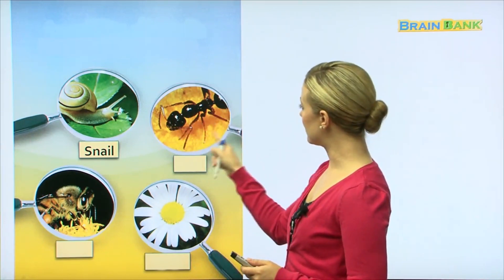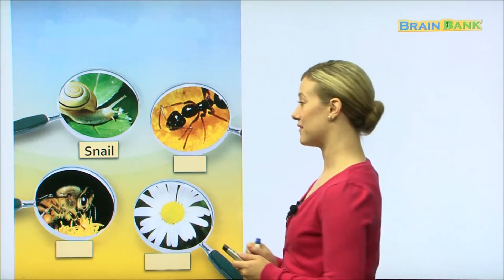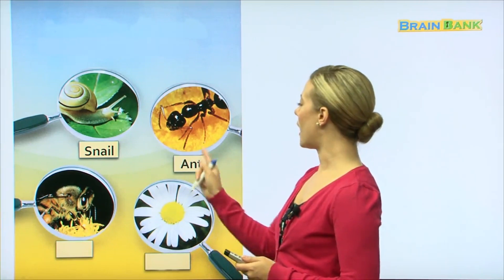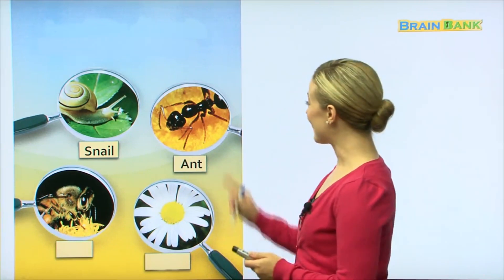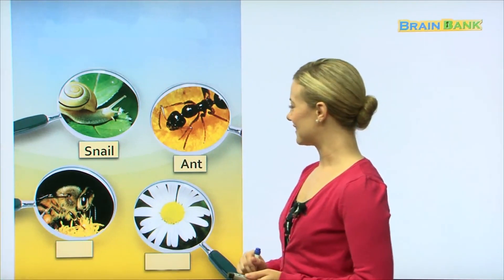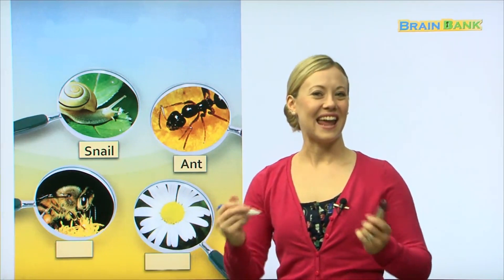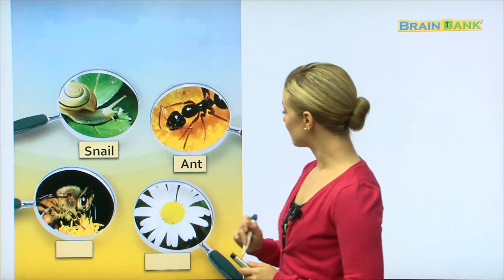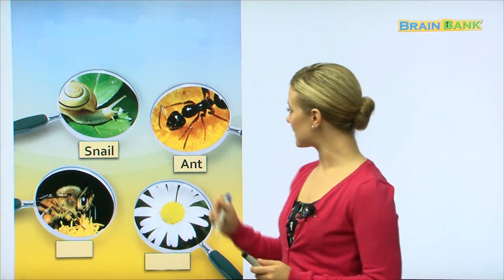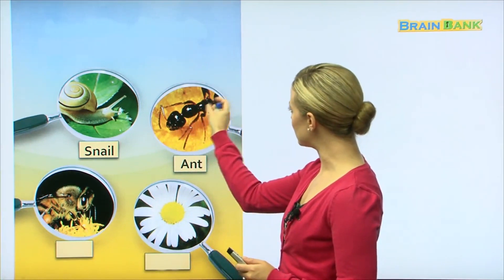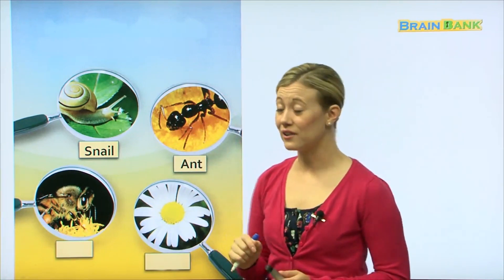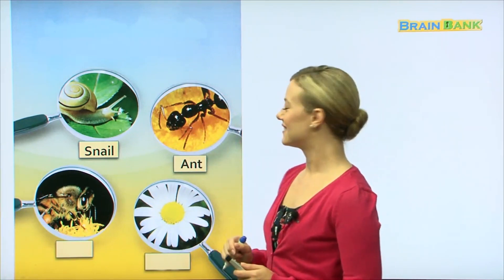Now what about this? This looks like another type of insect, one that we may see very commonly. An ant - this is an ant. Let's all say ant. Ant. Good. And this ant, I can see it very closely. I can see every part of its body and I can see its legs very clearly with the magnifying glass.